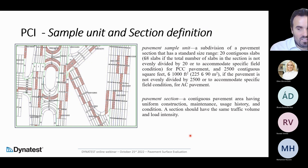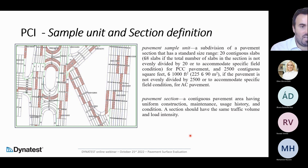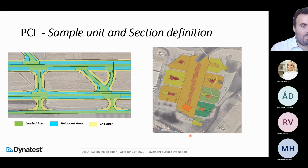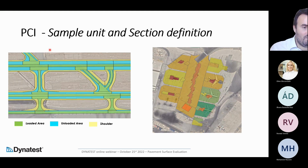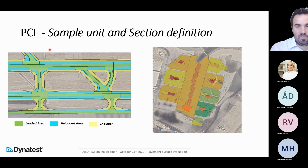Here is an example of a map for an airport where you have to decide where to run the test. There are rules to respect compared to the standard to ensure your investigation is representative of your pavement. In airport surveys, it's more critical than for roads — you need to define areas with loaded area, unloaded area, and shoulder, then decide which part to test. The apron is an example with a huge area that is not loading-related.